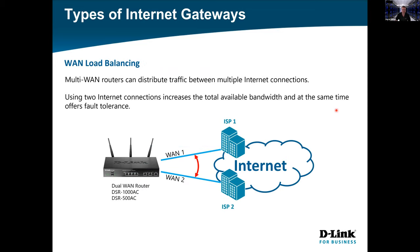With load balancing we can use WAN 1 as the primary and WAN 2 as the secondary. There are two versions: round robin and spillover. Round robin alternates sessions between WAN 1 and WAN 2 to increase available bandwidth. It provides both fault tolerance via failover and the ability to balance load between two WAN connections.